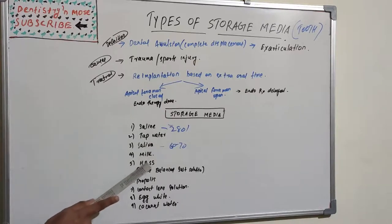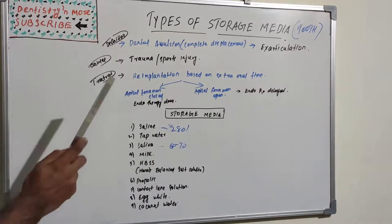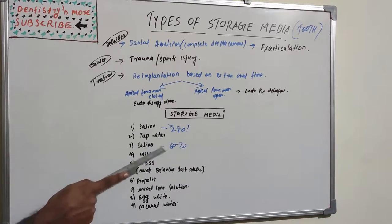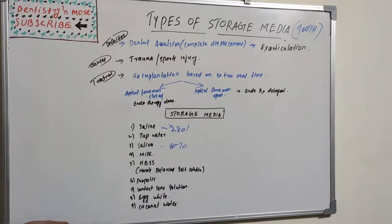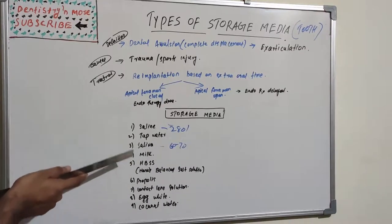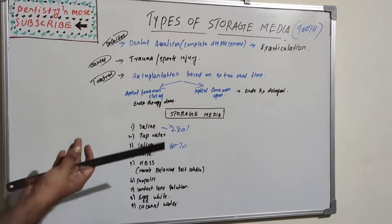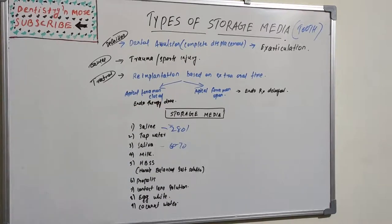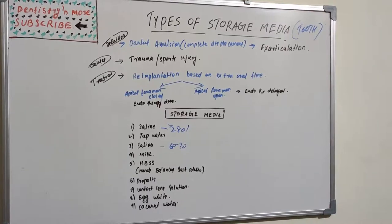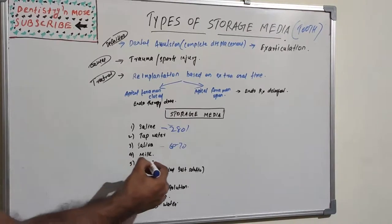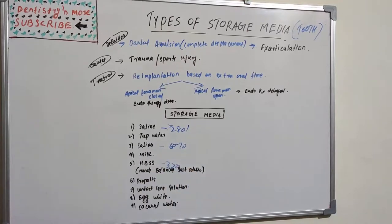This is the most commonly used storage media - HBSS or Hanks Balanced Salt Solution. It is a very standard solution. This solution is non-toxic, biocompatible with PDL cells, pH is 7.2, osmolarity is 320. It does not require a refrigerator and it has a 2-year shelf life.